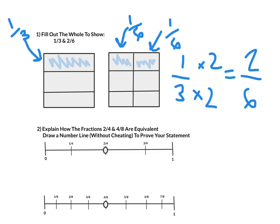Moving on to number 2. Explain how fractions 2 fourths and 4 eighths are equivalent. Without cheating, draw a number line to prove your statement. I got the cheat, because they are my number lines. But, from the previous slide, you take the numbers from 1 fourth, and you multiply them, like I did the previous question. So, you take 1 fourth, multiply that by 2, you get 2 eighths. You take 2 fourths, multiply that by 2, and you get 4 eighths. So, 2 fourths and 4 eighths are equivalent, because once you multiply 2 fourths by 2, you'll get 4 eighths.